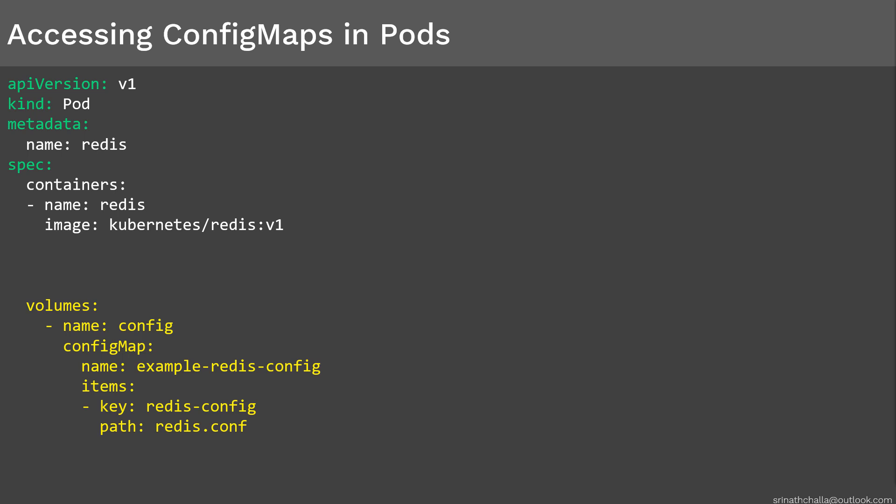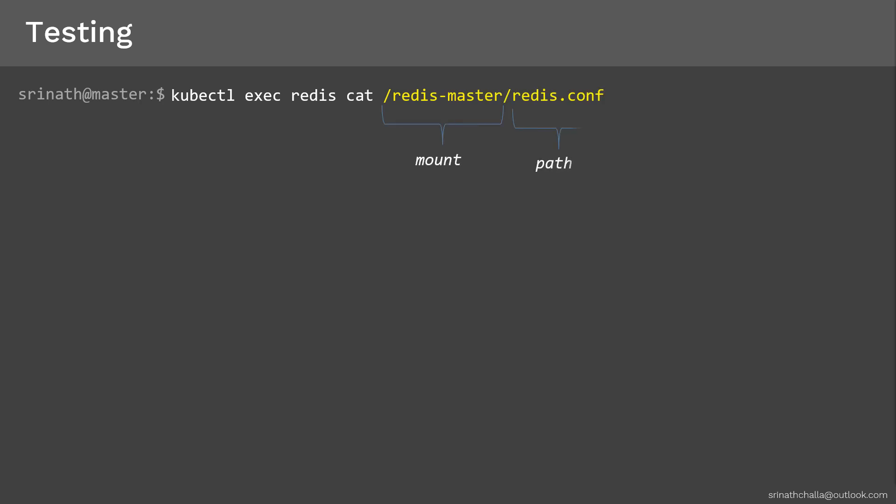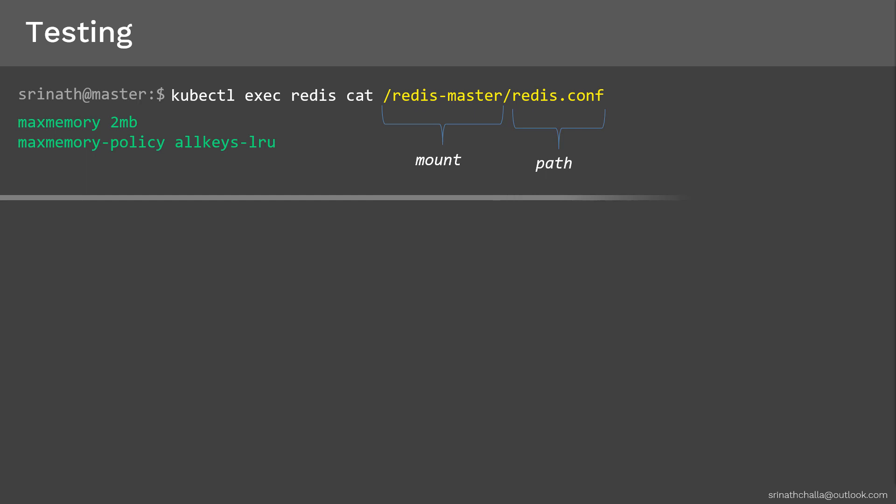Now you can create this deployment using the kubectl create command. In the next slide, we will verify that the data is present in the location we wanted. To verify, let's cat the target file inside the pod using the kubectl exec command. Here is the command for it. In this command, redis is the pod name we just created, redis-master is the mount point, and redis.conf is the path. All of these are mentioned in the pod spec file from the previous slide. Once you run this command, you can see the same contents of the file.